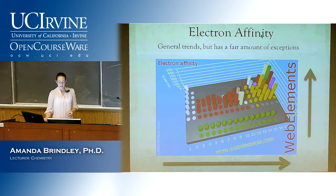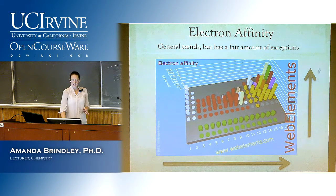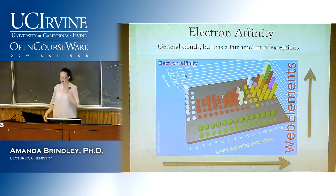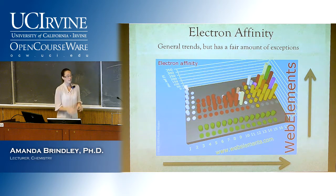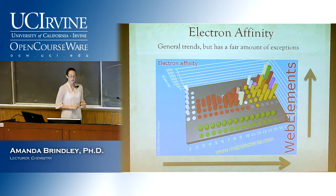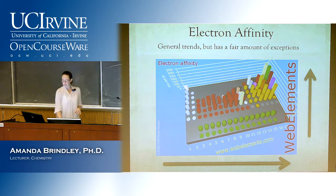The trend for electron affinity follows a lot of the others: it increases as you go up the periodic table and increases as you go to the right. There's a great website where you can graph any of the periodic trends in different visual formats — numbers, cityscape style, squares, circles — so you can see where the trends fall. I'm showing two different ways of displaying electron affinity data, but there are many ways to explore it.